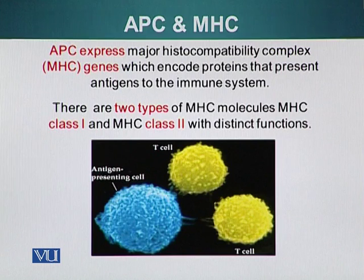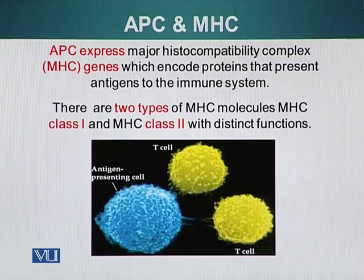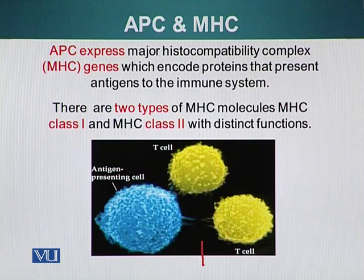In this photograph, you can see an antigen-presenting cell shown in blue and two yellow balls which are the T-cells. If you look closely, you will see spikes interacting from and extended by both cells. These spikes are basically the receptors which are interacting with each other.